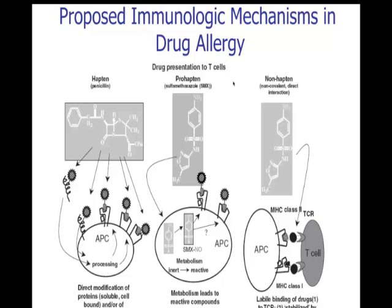Similar is the pro-hapten hypothesis, exemplified by sulfamethoxazole. Here, it's not sulfamethoxazole itself that's the hapten but its metabolite, a nitroso compound, which binds to protein and becomes the allergen. A more recent hypothesis is the PI concept — pharmacologic interaction — where the drug itself interacts directly with the T-cell receptor and causes activation. This has been shown with sulfamethoxazole, some anticonvulsants, and others.